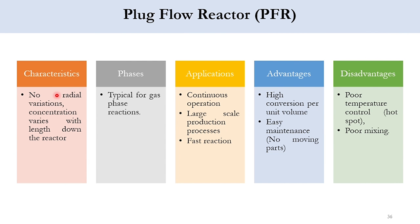Applications include continuous operation, large-scale production processes, and fast reactions. It is typically used for gas phase reactions. Its characteristics include no radial variation, and concentration varies with length down the reactor. Advantages include high conversion per unit volume and easy maintenance since it has no moving parts, unlike the CSTR with its agitator. Disadvantages include poor mixing and poor temperature control, and hot spots can develop in the plug flow reactor.